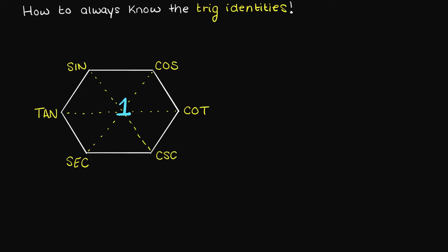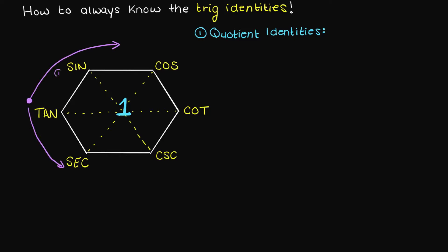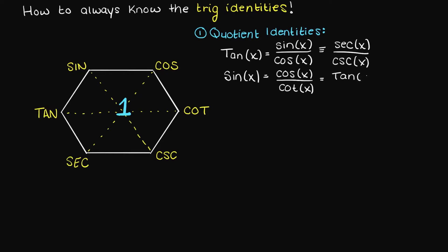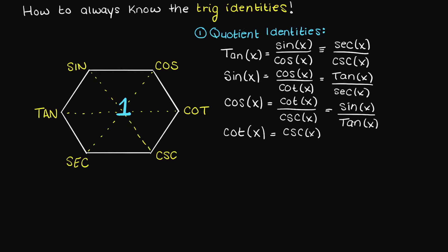Let's understand how. First let's get our quotient identities. Say we want the two tangent quotient identities — we start at tan and we can move either clockwise or counterclockwise; both ways work. We take the first function we hit and set that as our numerator and the second one as our denominator. Therefore we have our two quotient trig identities for tangent as sine over cosine and secant over cosecant.